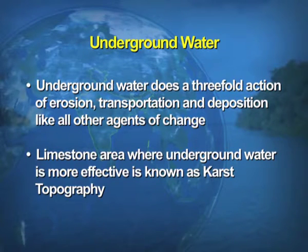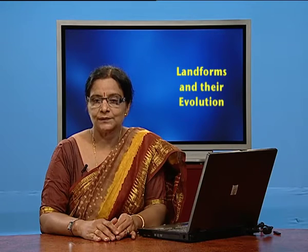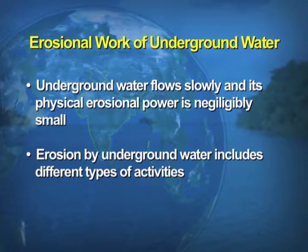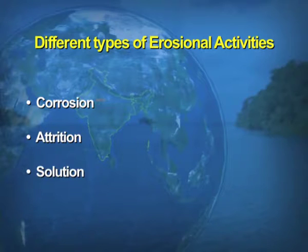Limestone areas where underground water is very effective are known as karst topography. The erosional work of underground water — underground water flows slowly and its physical erosional power is negligibly small. Erosion by underground water includes corrosion, attrition, solution, and hydraulic action. Out of all these, solution is the most important process.